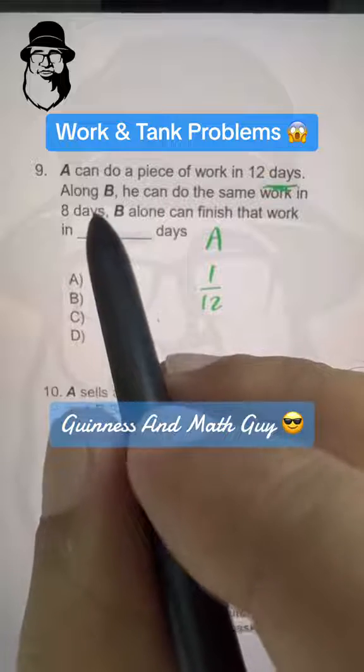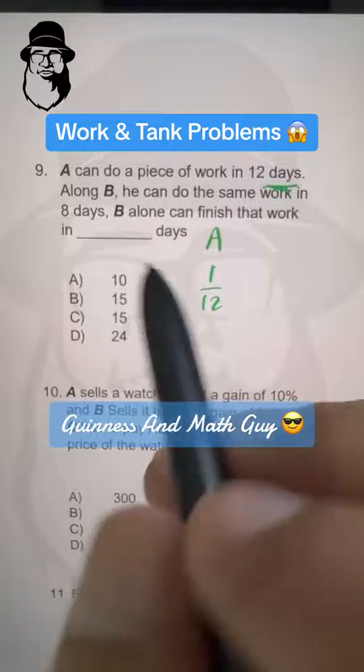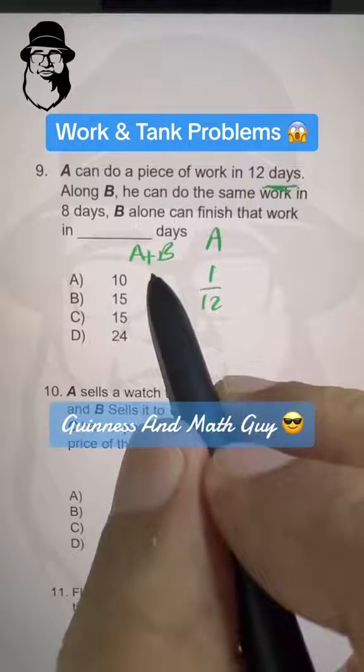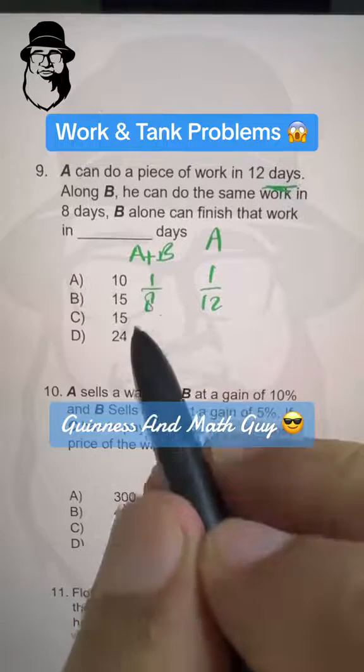And along B, he can do the same work in 8 days. So A plus B, the working efficiency is 1 over 8, right?